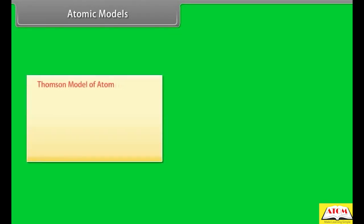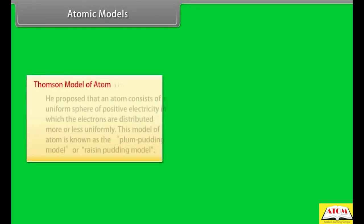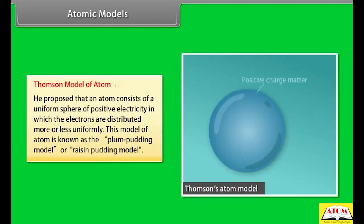Atomic models: Thomson's model of atom. He proposed that an atom consists of a uniform sphere of positive electricity in which the electrons are distributed more or less uniformly. This model is known as the plum pudding model or raisin pudding model.